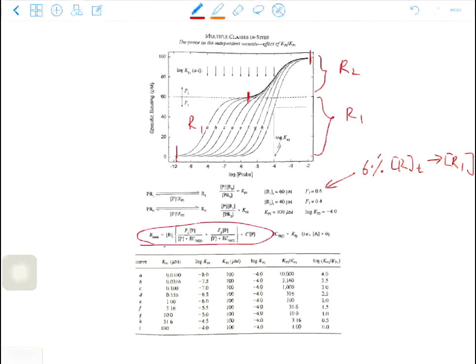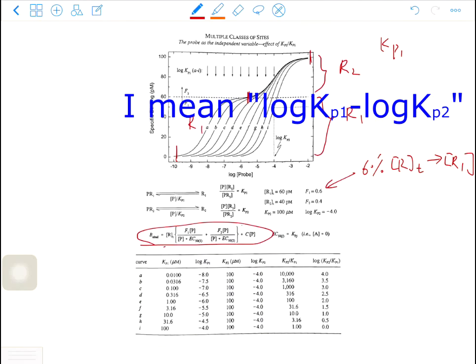From here to here, the upper 40% of the curve A corresponds to the binding of R2 and the ligand. You can only observe two complete rectangular hyperbola when the difference between KP1 and KP2 is bigger or equal to 4.